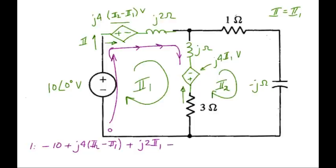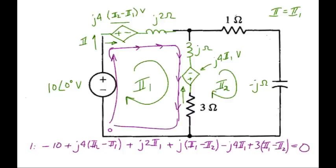Continuing, we have the impedance times current going from top to bottom, so that's I1 minus I2. It's a voltage source, bump into the negative sign first. Its value is J4 I1 volts. We have 3 ohms times the current going from top to bottom. That's I1 minus I2. And we're back to the beginning, so that's 0.